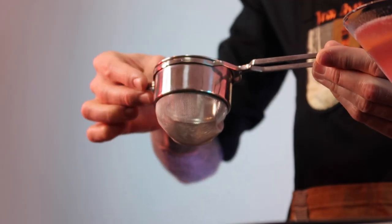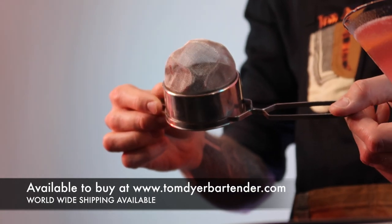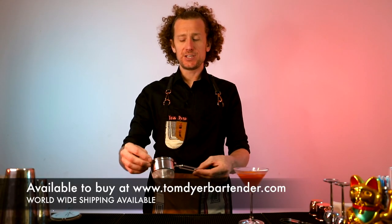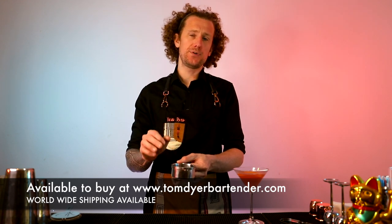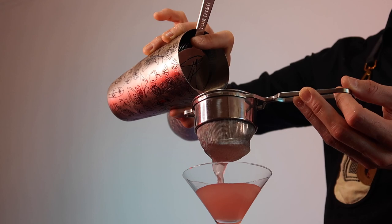This is the Gorky Fine Strainer. Now this is quite different to some of the other fine strainers you may see on the market. This is used for catching all the tiny impurities when it comes to straining a cocktail such as the Cosmopolitan.